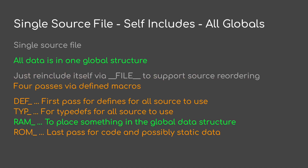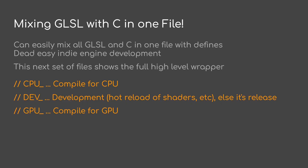Another thing I do is a single source file — everything's in one file. If I need to do any source reordering, I have a re-include system with four passes: def for define, typ for typedefs, ram for something in the global data structure, and rom — the last pass for all the code. Note, all my data is global — it's all in one giant structure. It's very easy to use; keeps it quite simple. I also mix GLSL with C in one file. This works for various reasons. One can easily mix all the GLSL in C with defines, share code, share defines — it makes the code quite easy to work with. I use a few defines for this: CPU underscore, dev underscore, and GPU underscore for the associated usage.